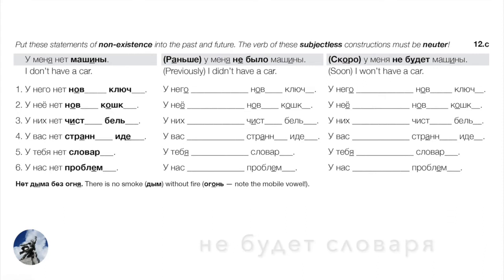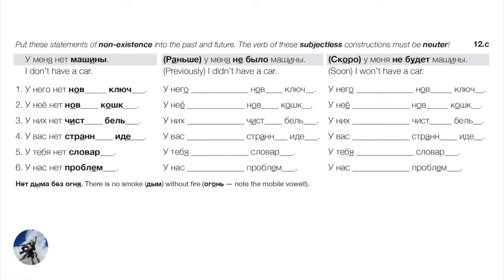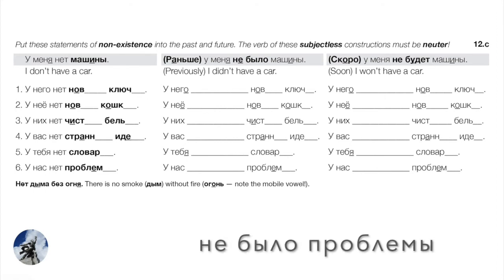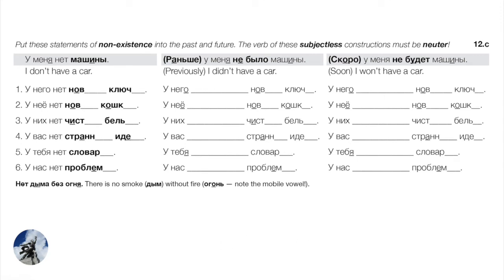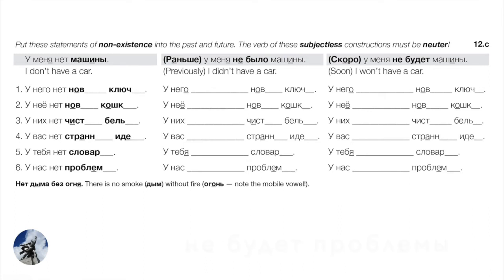Number six — проблема, a hard feminine noun. We don't have a problem: У нас нет проблемы. Past: У нас не было проблемы. Future: У нас не будет проблемы.